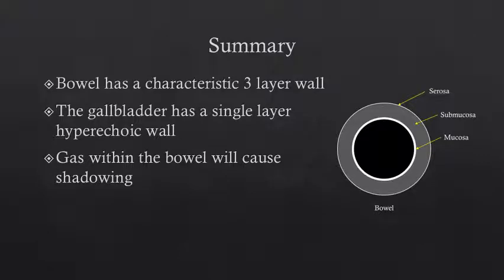In summary, bowel has a characteristic three-layer wall on ultrasound. The outer wall, or the serosa, is hyperechoic. The middle layer, the submucosa, is hypoechoic. And the inner layer, the mucosa, is hyperechoic. The gallbladder, unlike the bowel, has a single-layer hyperechoic wall, helping you distinguish bowel from gallbladder.